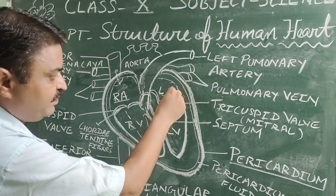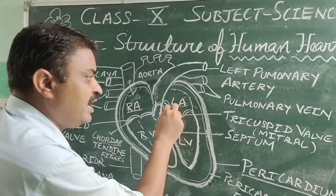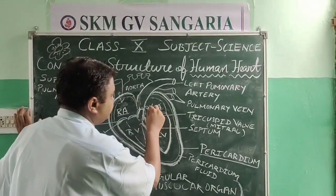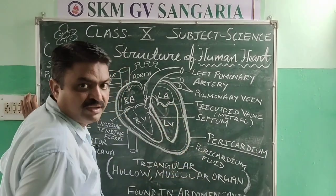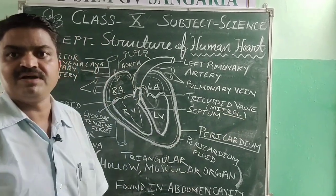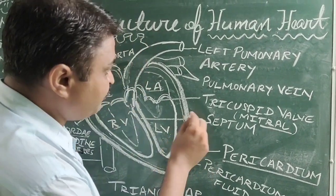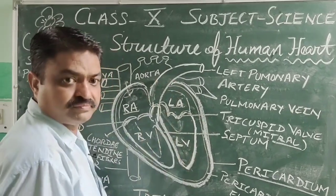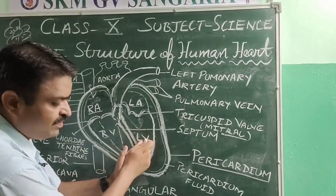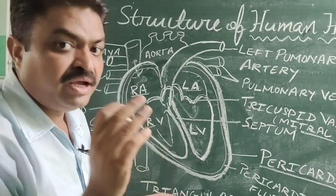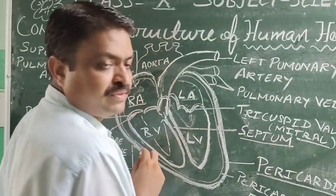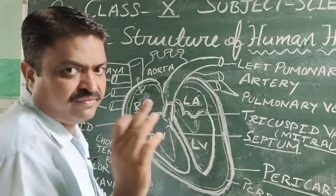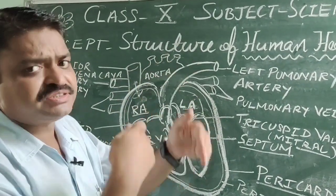Similarly, the left atrium and left ventricle are separated from each other by a valve known as the tricuspid valve, because it has three flap-like structures. It is also known as the mitral valve, found between the left atrium and left ventricle. The right ventricle and left ventricle are separated by a boundary called the septum.